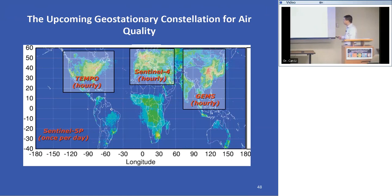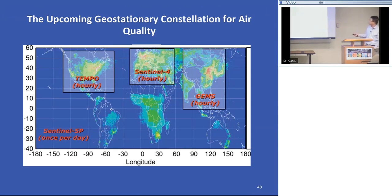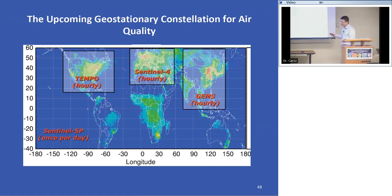Another major development for our community is the upcoming geostationary constellation for air quality — including NASA's TEMPO instrument over North America, Sentinel-4 over Europe, and the GEMS instrument over East Asia. All these instruments will make much higher temporal frequency measurements — approximately hourly instead of once daily — providing much more data to beat down the noise and get better emission estimates. We are currently working with the GEMS team to help get ready before their launch in late 2019 or early 2020.